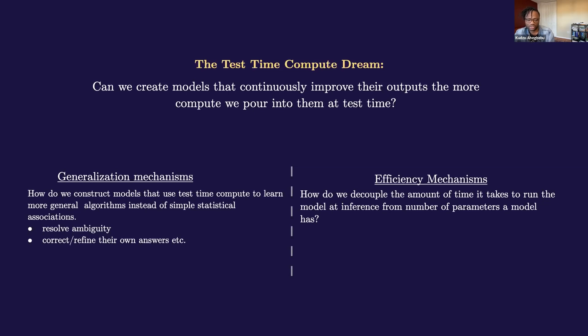So I tend to bucket this test time compute stuff into two general categories. One is generalization improvement mechanisms, which deal with the question of how can we create models that use test time compute to learn more general algorithms instead of learning simple statistical associations in data. Ideally, we'd like these models to use the extra compute to resolve ambiguity and to correct and refine their own answers.